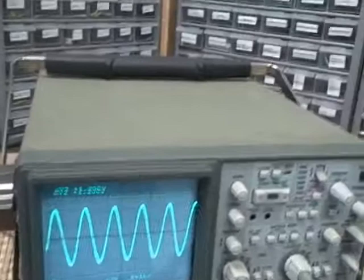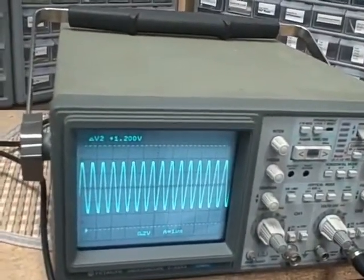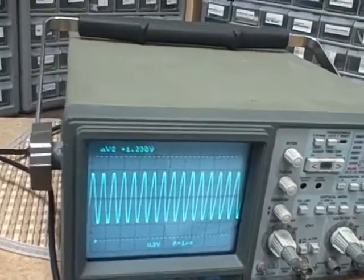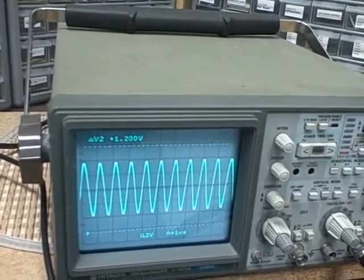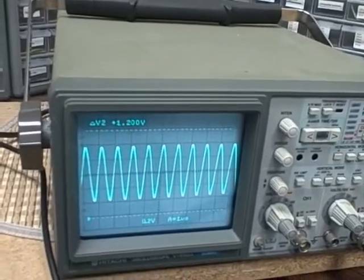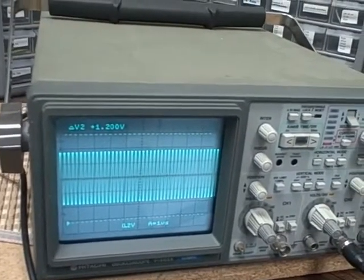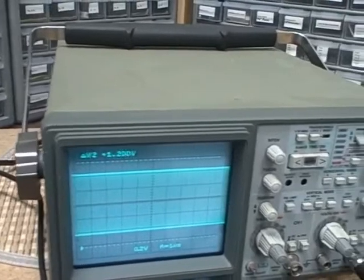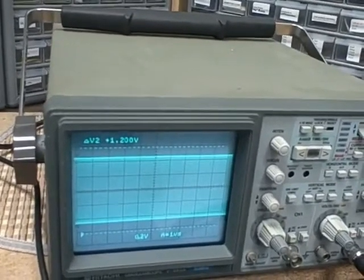So I can change my input frequency. Here's 1.5 megahertz. There's 1. So we're getting 1 cycle per division right now. Here's 2, 3, 4. Here's 14. It's 20.